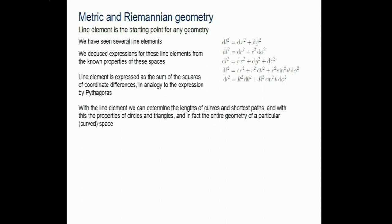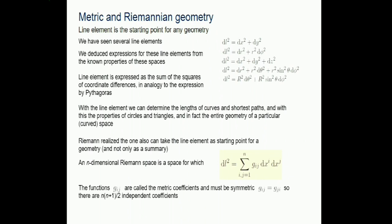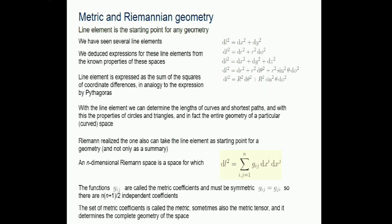What Riemann realized is that instead of summarizing geometry in a line element, you can take it as a starting point. Define a line element as ds² = g_μν dx^μ dx^ν; this defines a geometry and from it you can build up any geometry. The x^μ are the coordinates you choose - somewhat arbitrary - while the g_μν are the metric coefficients, or metric functions. They must be symmetric because you can interchange the indices. This g is called the metric tensor, and g stands for gravity.